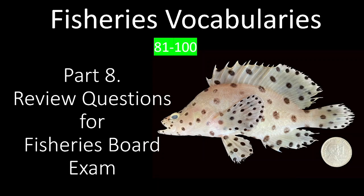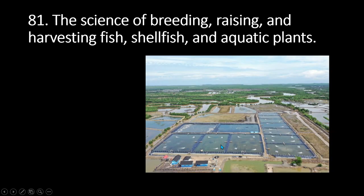Hello everyone, today we're going to continue with our fisheries review questions. We are now in Part 8 and we will be dealing with fisheries vocabularies starting from question number 81 up to 100. Number 81: this refers to the science of breeding, raising, and harvesting of fish, shellfish, and aquatic plants. A. Pisciculture, B. Fish hatchery, C. Fish husbandry, D. Aquaculture, E. All of the above.